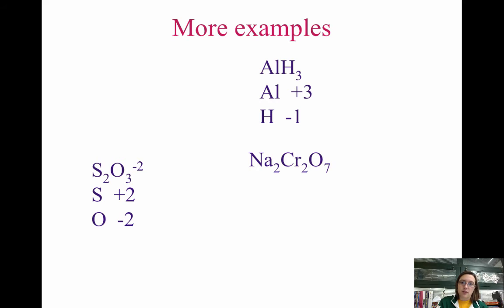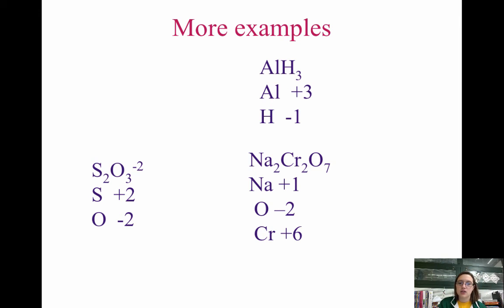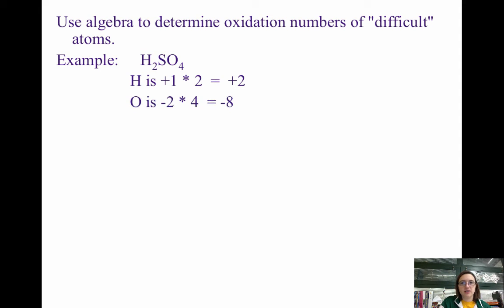For sodium dichromate, Na₂Cr₂O₇: sodium is always +1. Use oxygen first — oxygen is −2, and seven oxygens give −14. Sodium contributes +2 total. To make the whole compound equal zero, chromium must be +6. We can also approach it by noting that Cr₂O₇²⁻ must equal −2: −14 from oxygen, so chromium must contribute +12 total, meaning each Cr is +6. For CO₂: oxygen is −2, so carbon is +4.